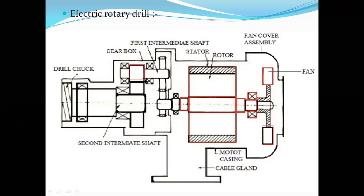Next is the gearbox. In many entrance examinations, questions may come like: which drilling machine contains a gearbox? Or if the drilling machine is operated by means of a compressor it won't contain any gearbox. Or the question might be: what is not a component of the jackhammer drill? — and the answer is gearbox. The gearbox controls speed by engaging or disengaging gears. This is called the drill chuck — the place where the drill rod is attached, using slots or threads.